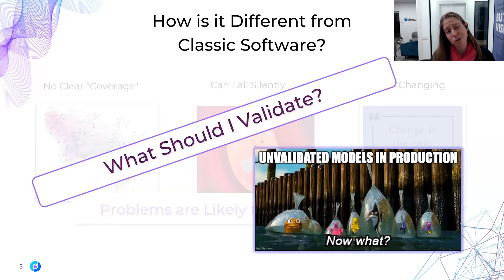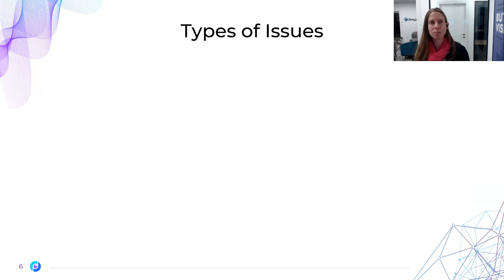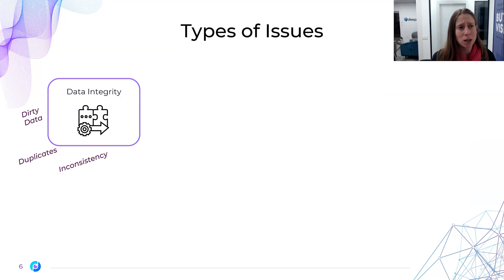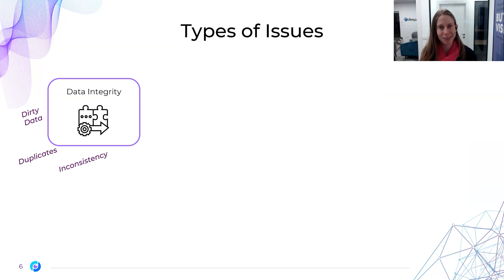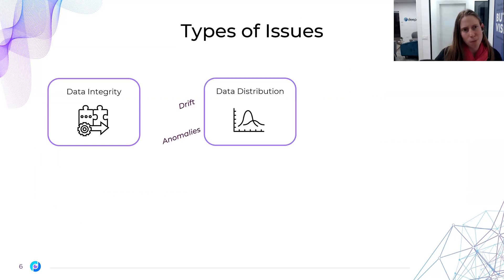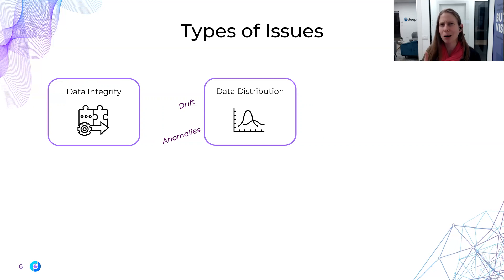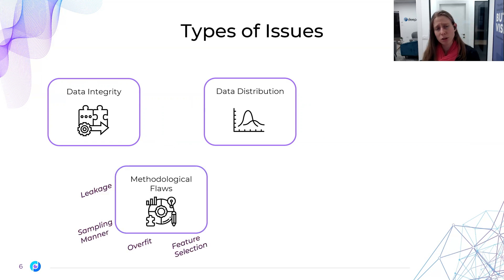This brings us to the question of what should we validate. Let's look at the typical types of issues in machine learning. We have things that have to do with data integrity — obviously, if the model is based on the data and the data isn't correct, that is a central problem: garbage in, garbage out. Things that have to do with the distribution — if you have various datasets that behave completely differently, is one relevant to evaluate the other? Or how will the model behave if the data distribution changes? And things that have to do with the methodology of training — the way we collected the data, the way we split it, or the way we built the model.